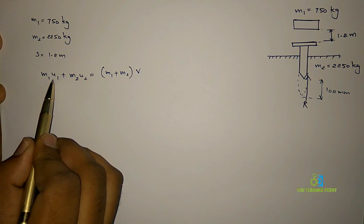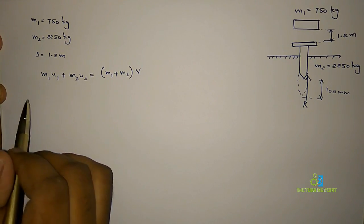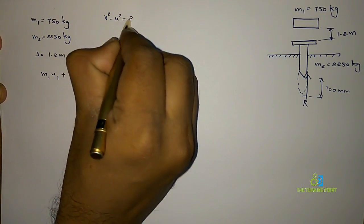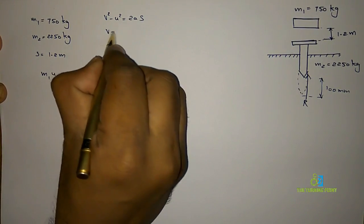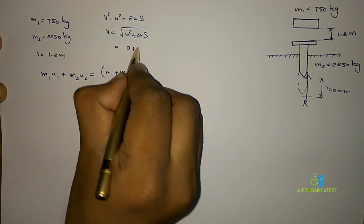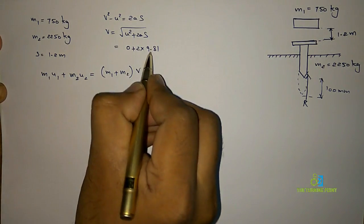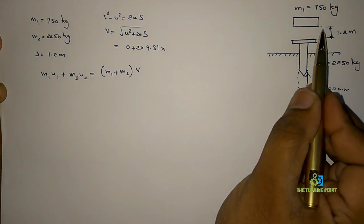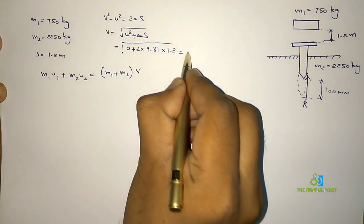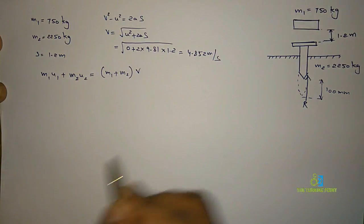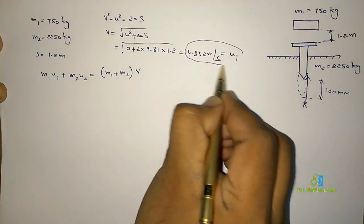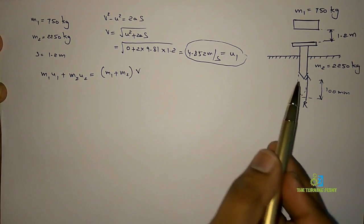We don't yet know the initial velocity of the hammer when it strikes the pile, so we use the kinematic relation: V² = U² + 2aS. Initially the hammer is at rest, so U = 0. Acceleration a is due to gravity, 9.81 m/s², and displacement S = 1.2 m. Calculating: V = √(2 × 9.81 × 1.2) = 4.852 m/s. This is the initial velocity of the hammer at impact.